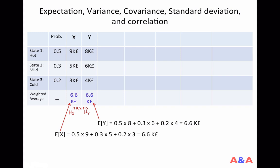How can we measure such risk — the variability in the performance of a random variable? Such risk is measured by the variance. Variability of a random variable is measured by the notion of variance.